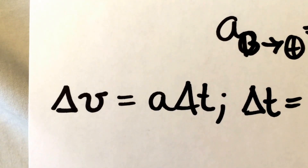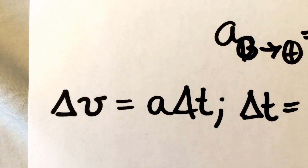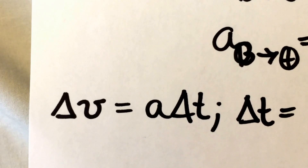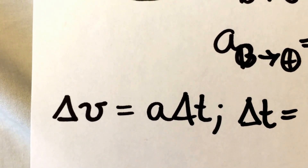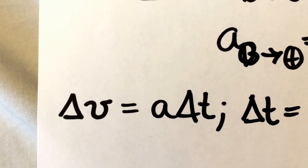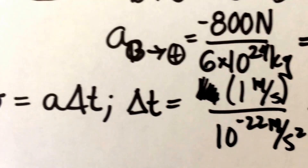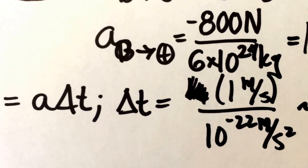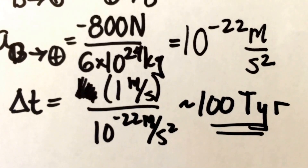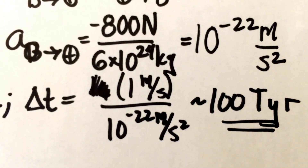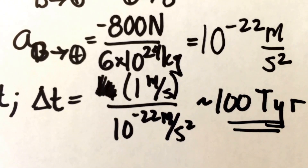Now we can ask the question: how long would I have to wait for this acceleration to induce a sizable velocity on the mass of the Earth? If we take a velocity of about a meter per second and use the acceleration that I induce on the Earth, we find that the time it would take for the Earth to move at a meter per second due to this acceleration is about 100 trillion years. So if I were floating in space next to the Earth, it would take 100 trillion years for the Earth to accelerate to about a meter per second velocity toward me.